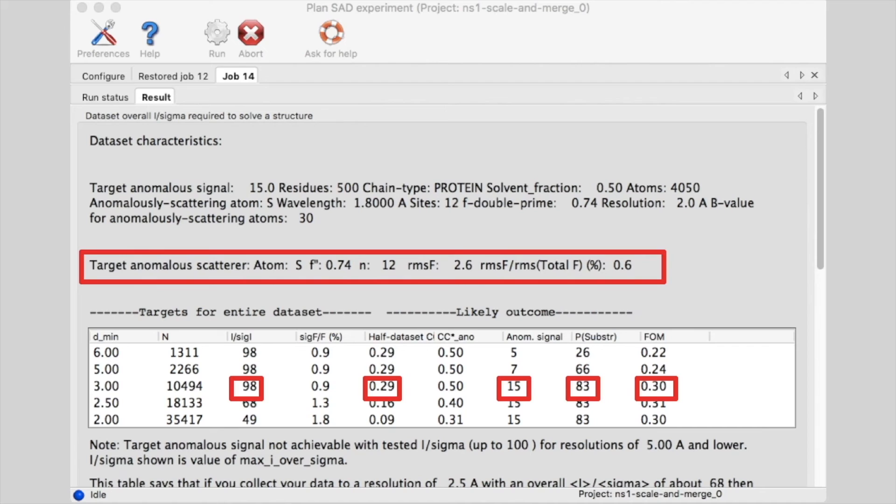If you want to test out more possibilities, try changing the target anomalous signal and you can see what I over sigma would be required to get each value you choose.